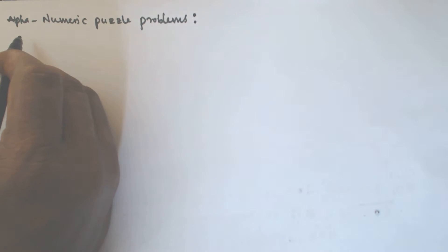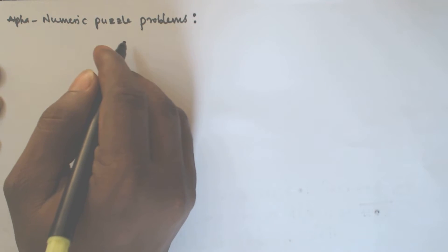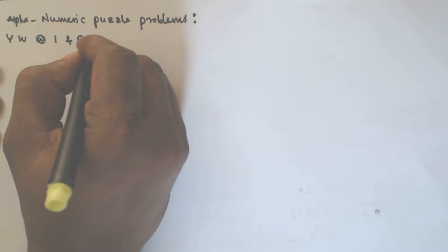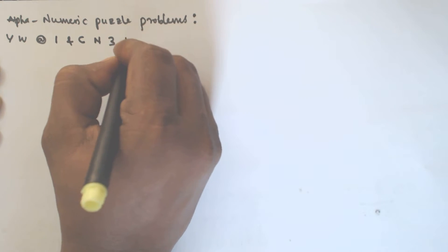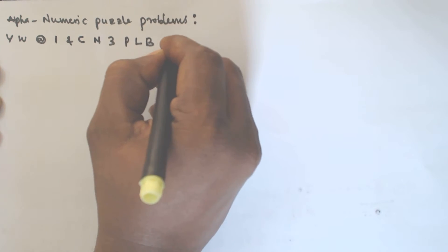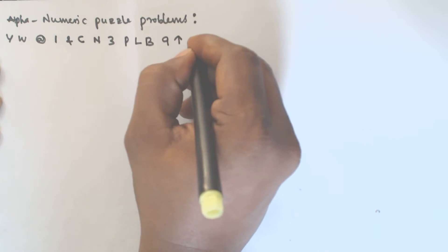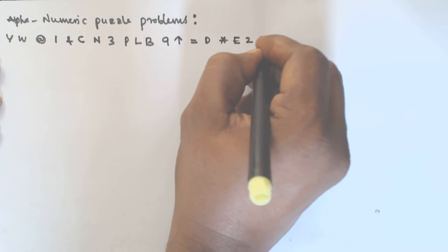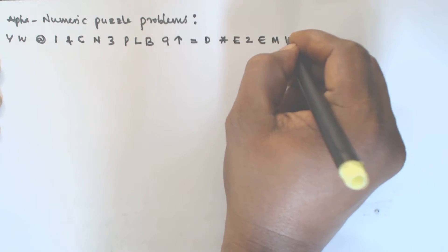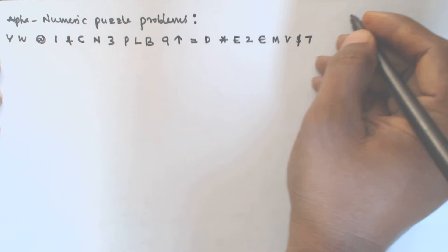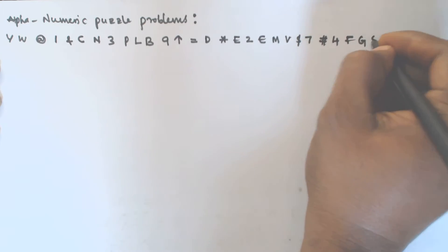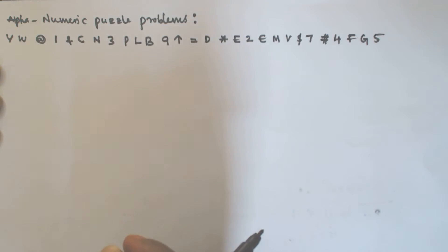Hello friends, in this video we will see another problem based on the alphanumeric sequence puzzle. The given sequence is: Y W @ 1 & C N 3 P L B 9 ↑ = D * E 2 € M V $ 7 # 4 F G and 5. These are the alphanumeric sequences given.